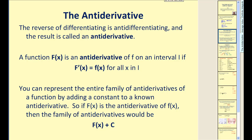Let's formalize the definition of the antiderivative. The reverse of differentiating is anti-differentiating, and the result is called the antiderivative. A function big F of x is the antiderivative of f on an interval I if the derivative of big F is equal to the original function f of x. You can represent the entire family of antiderivatives of a function by adding a constant to a known antiderivative. So if big F of x is the antiderivative of f of x, then the family of antiderivatives would be given as big F of x plus c.